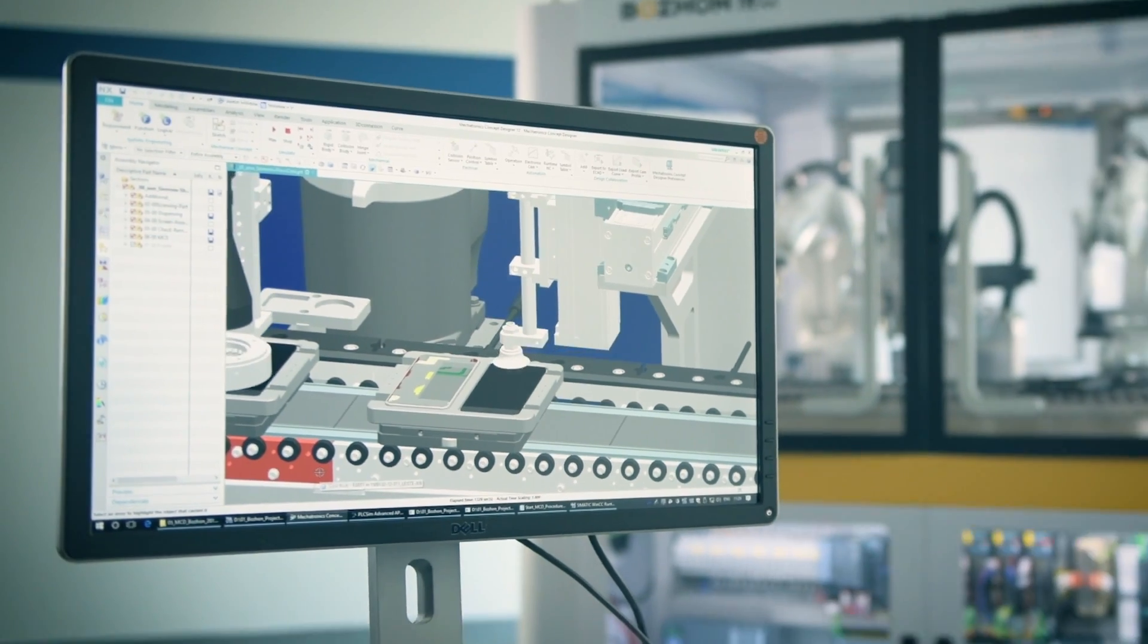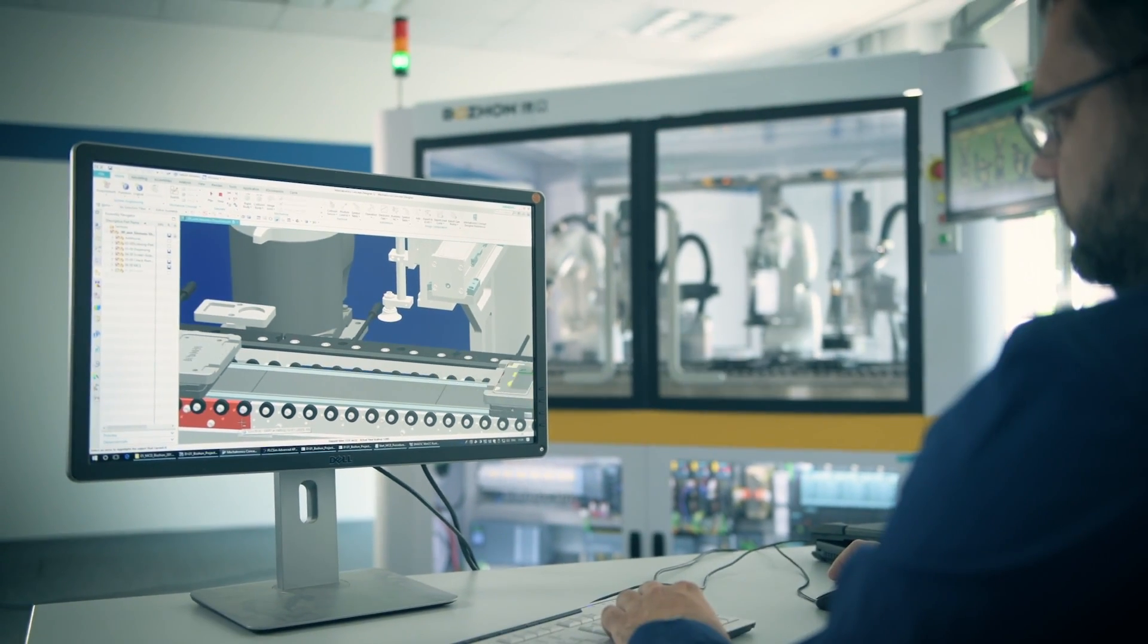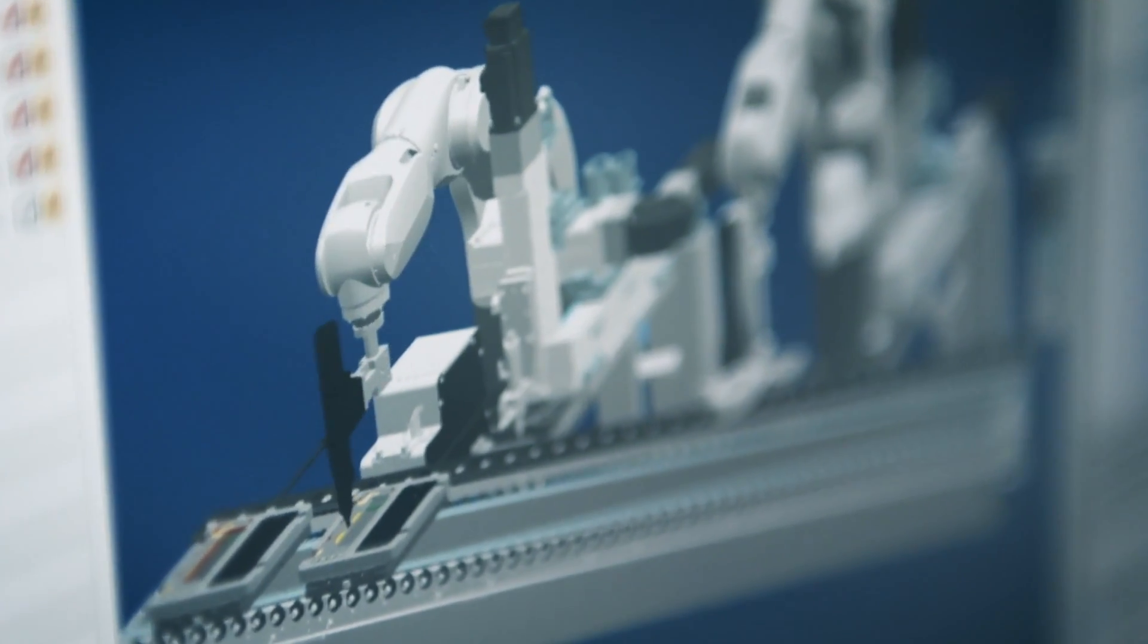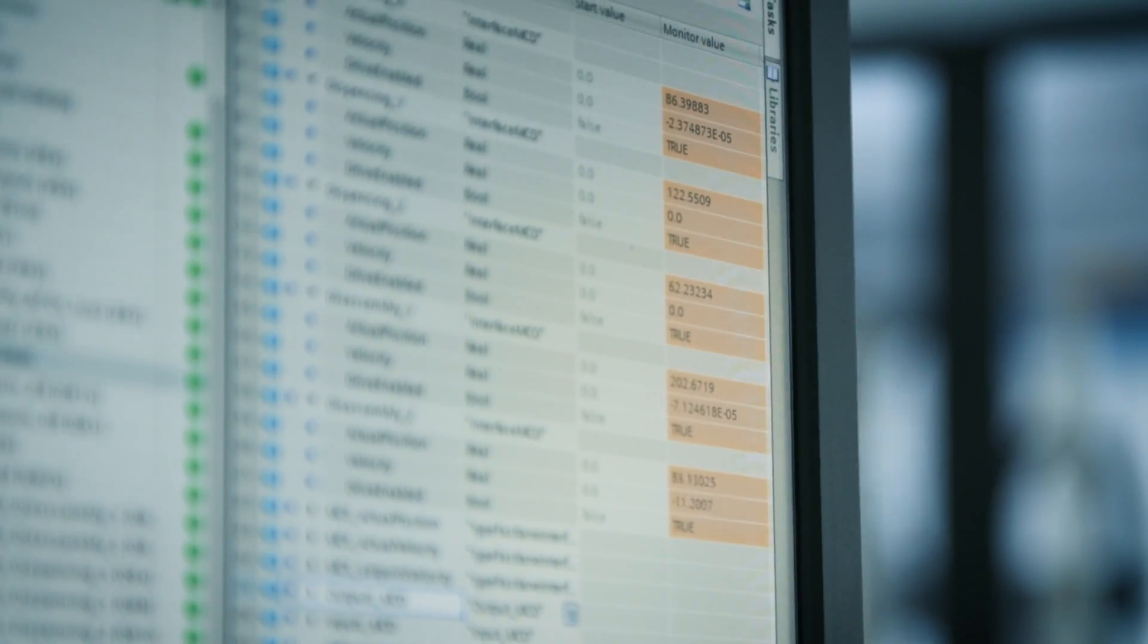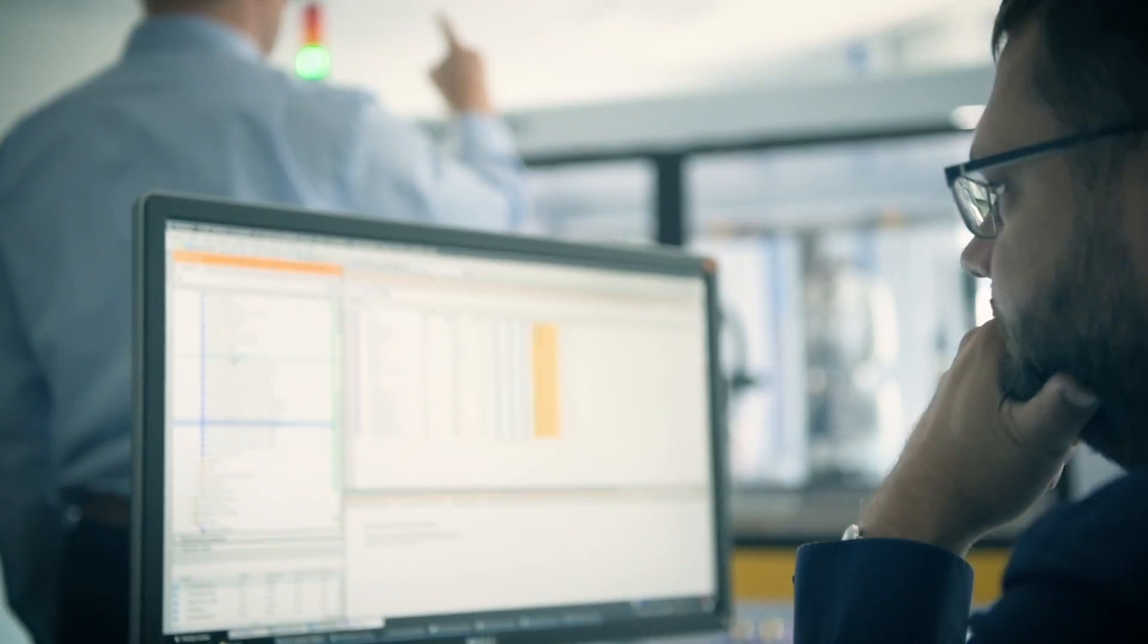There are many different versions of the digital twin. A digital twin is not automatically a three-dimensional model. It can also be a two-dimensional behavior model or an electrical data sheet. The digital twin is everything that helps us to create a virtual digital reproduction of a machine or a machine element.